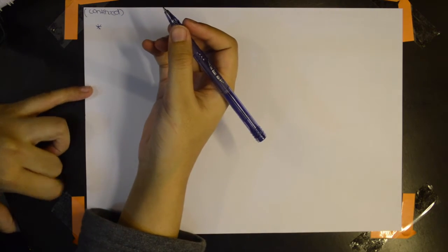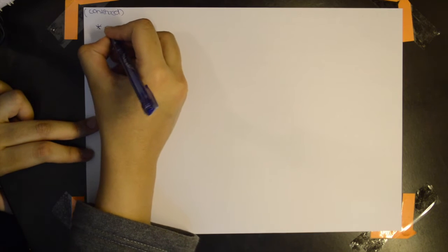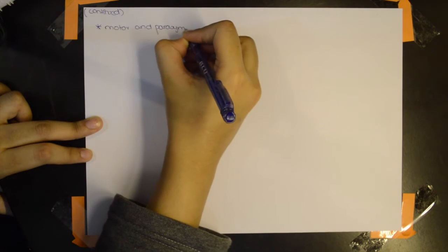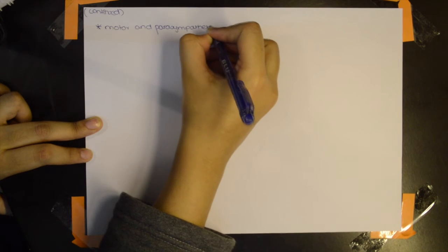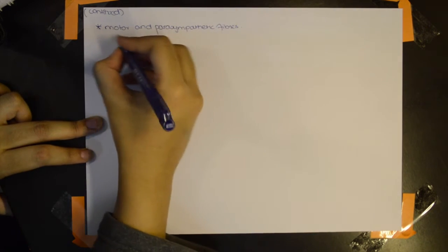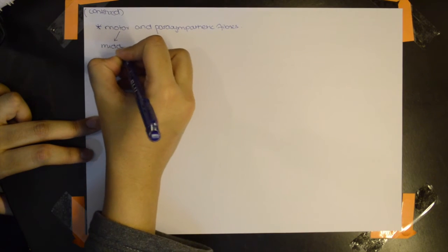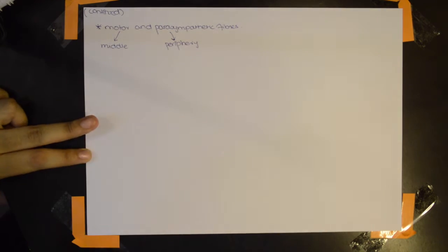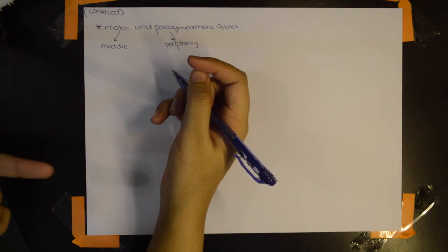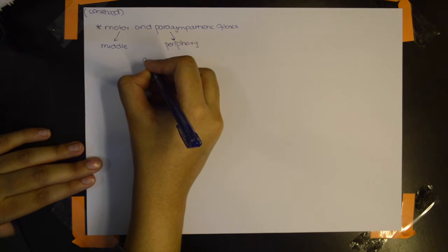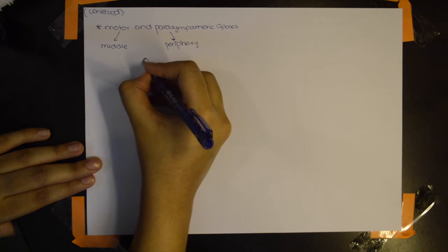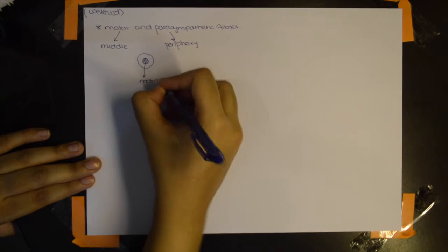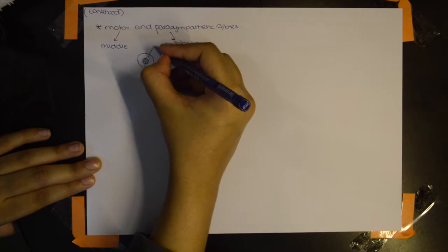Continuing with the third cranial nerve, we talk about the fibers. There are motor fibers and parasympathetic fibers. The motor fibers are located in the middle of the nerve, and the parasympathetic fibers are at the periphery. In the cross-section of the nerve you will see motor fibers centrally and parasympathetic fibers at the outer edge.